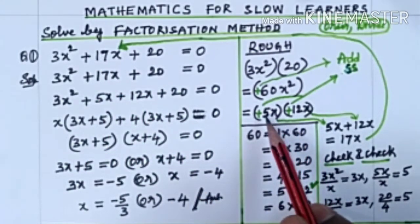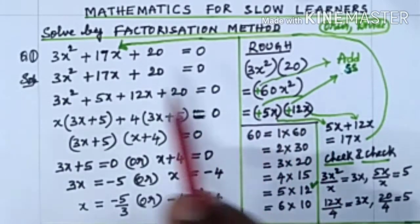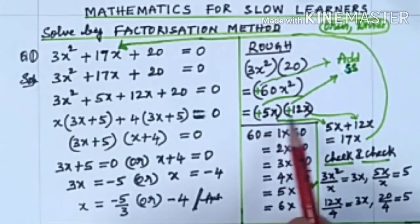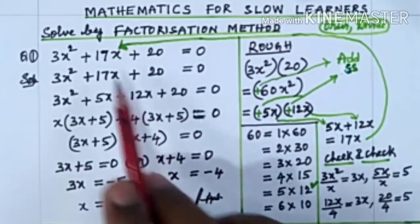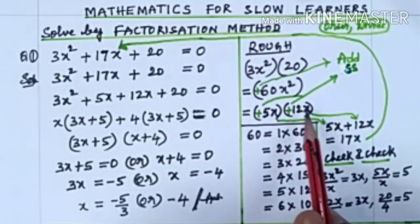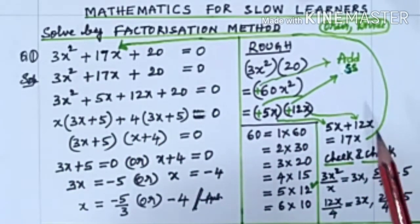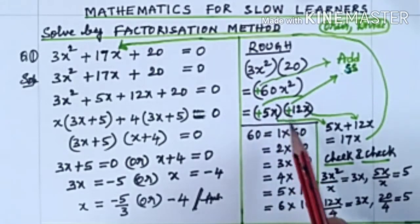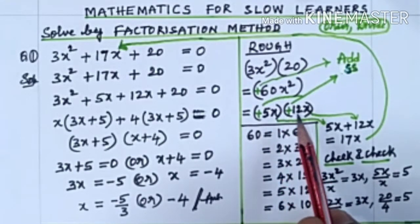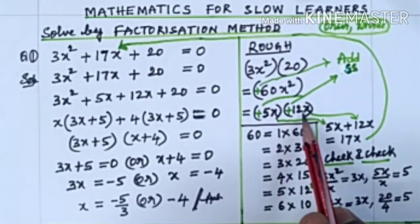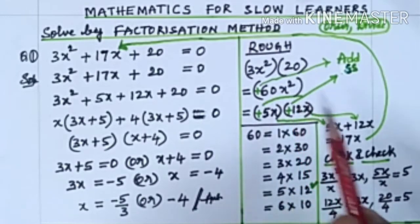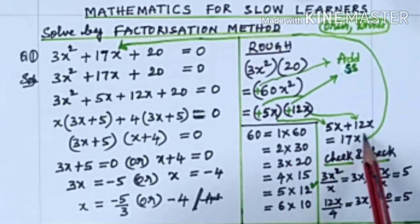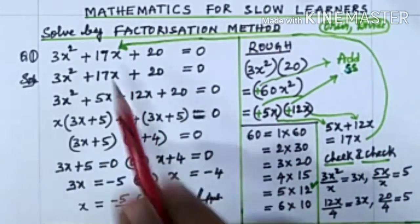So this becomes 5x and 12x. Here we have plus. So these two should follow plus sign: plus 5x plus 12x. If we multiply these two we should get plus 60x². Plus 5x into plus 12x is plus 60x². Similarly, if we add these two we should get 17x.